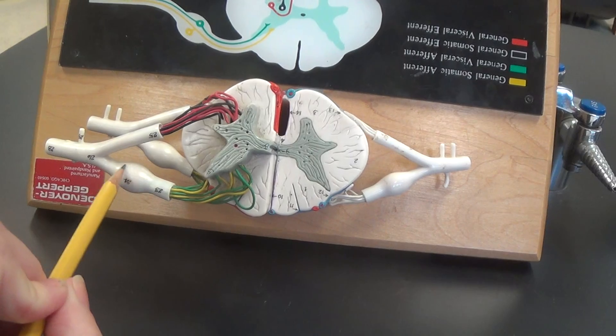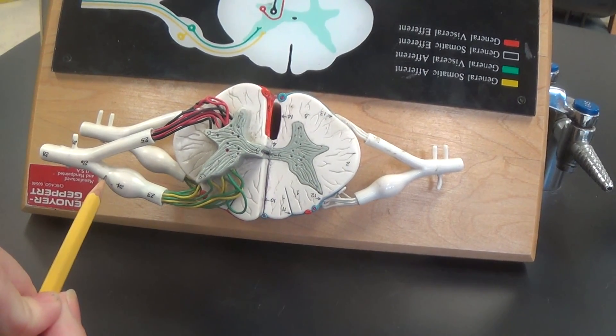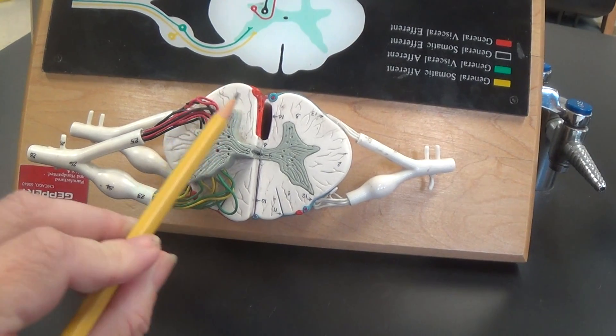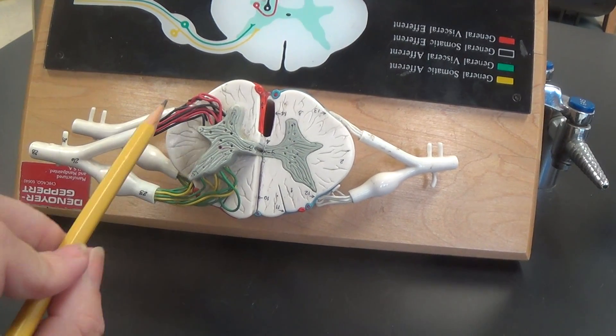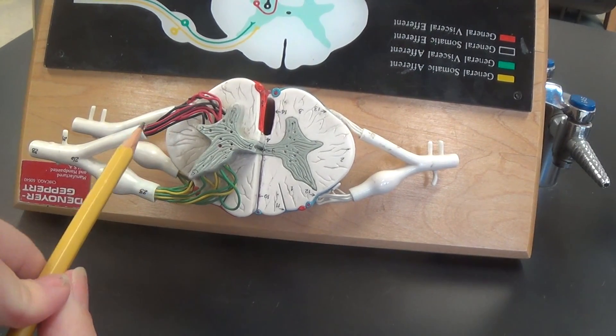The enlargement right here on the dorsal root is the dorsal root ganglion. This is coming from the anterior side or ventral side. This is therefore called the ventral root where all these rootlets come together and work together.